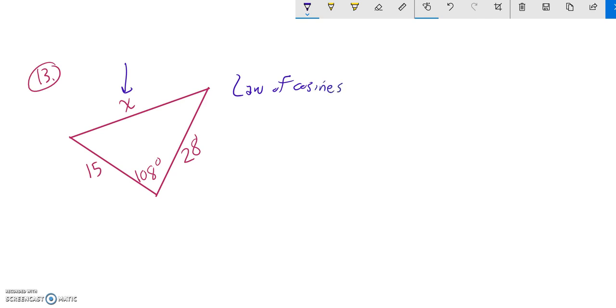Remember, law of cosines is the one where it's like the Pythagorean theorem, but with a little fix in it. So law of cosines says that a side squared is one of the other sides squared plus the third side squared. So in that way, it looks just like Pythagorean theorem.